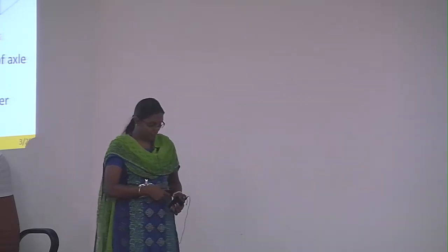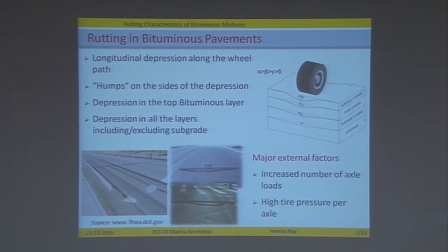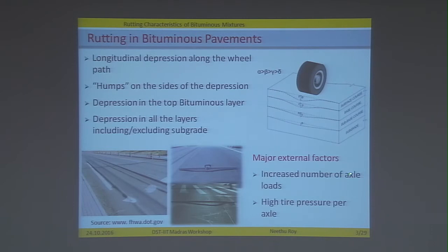As everyone is aware, rutting is the longitudinal depression that we see along the wheel path, and most of the time we see that there are humps formed on either side of this wheel path. Since the bituminous pavement is made up of different layers, this deformation seen at the top surface could be a deformation in any of these layers — the top bituminous layer or even at the subgrade layer. This depression is due to major factors such as an increased number of axle loads and high tyre pressure per axle.